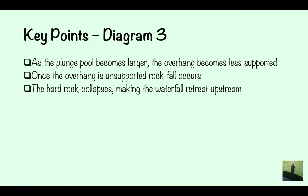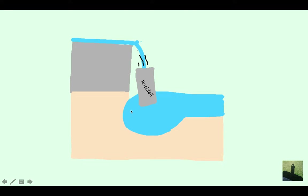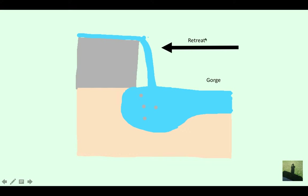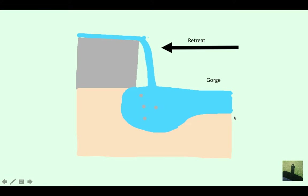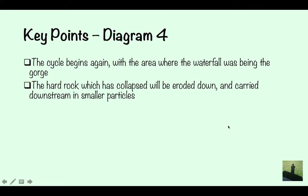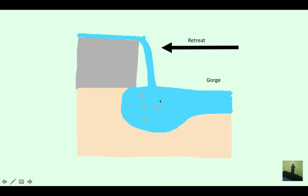The hard rock collapses, making the waterfall retreat upstream. Basically what you've got now looks like the first diagram again — it's like a cycle. It retreats upstream, and the cycle begins again, with the area where the waterfall was becoming the gorge. The gorge forms between the valleys where the waterfall previously was. The hard rock which has collapsed will be eroded down and carried downstream in larger particles, as it no longer has the force of the waterfall's hydraulic action.